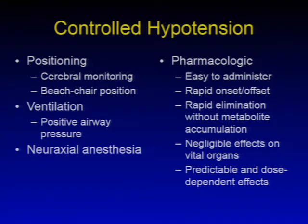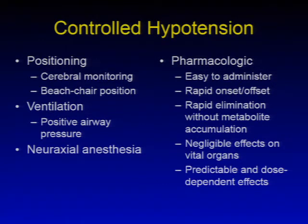Controlled hypotension also involves positioning, which may involve cerebral monitoring. The beach chair position plays an interesting role in that typically blood pressures are monitored and measured in the peripheral zone, but not necessarily measuring the blood pressure at the perfusion of the brain. Controlled hypotension may also be achieved through ventilation with positive airway pressures and neuroaxial anesthesia due to the relaxation of the vasculature from blunting of the sympathetic responses.